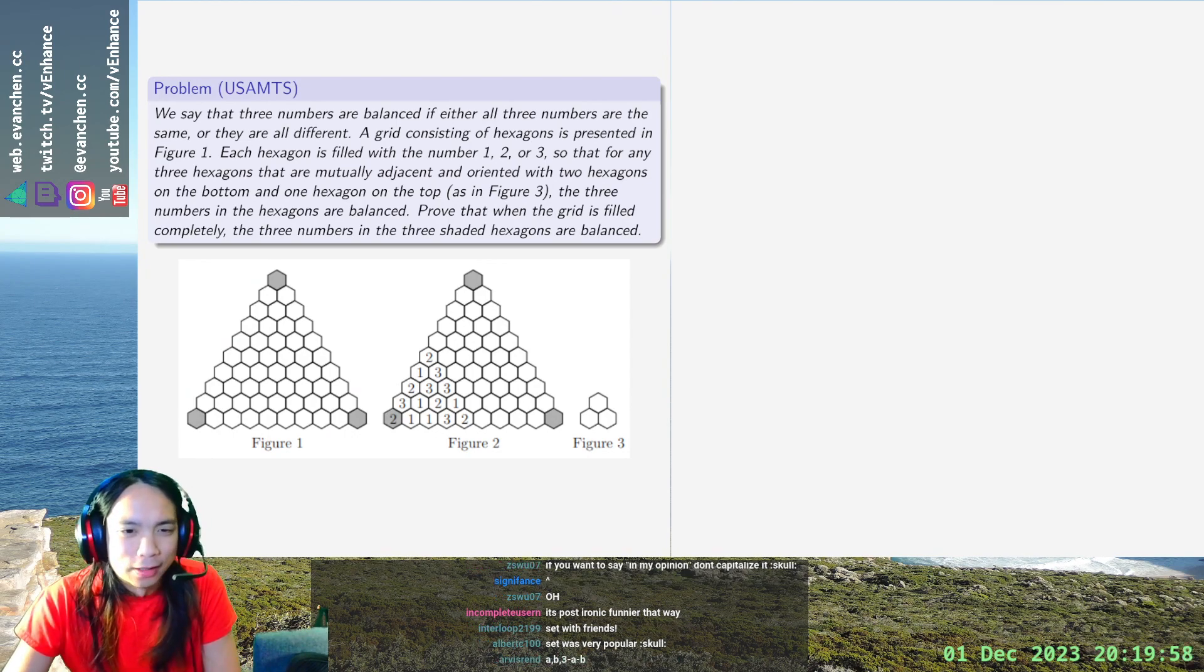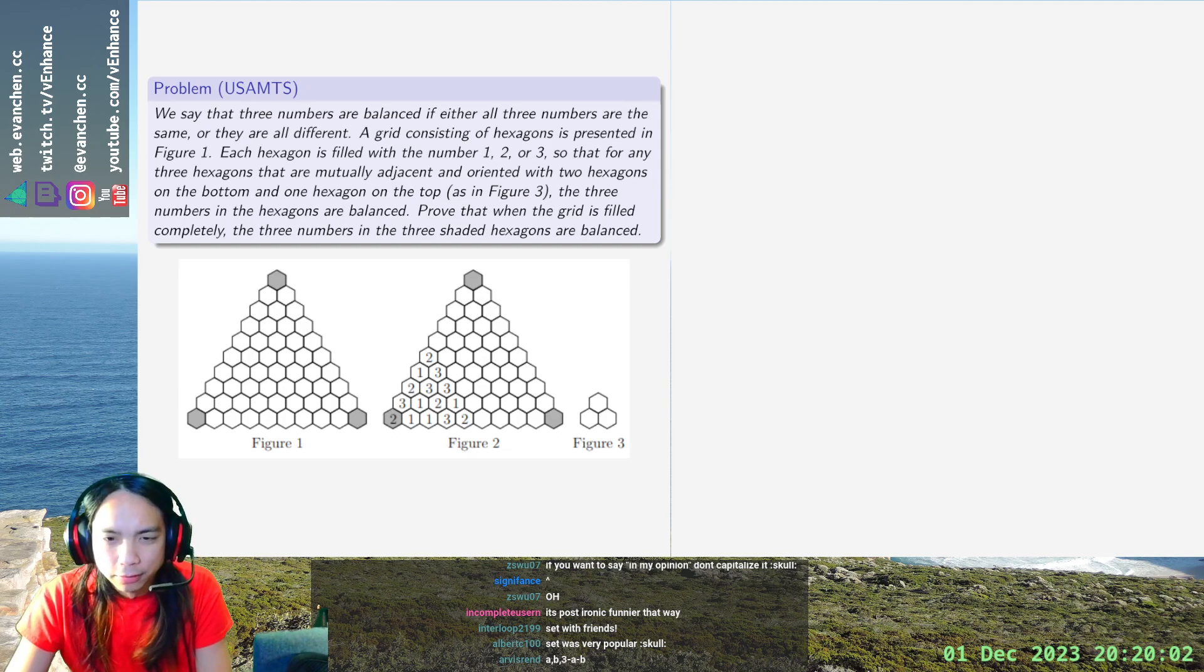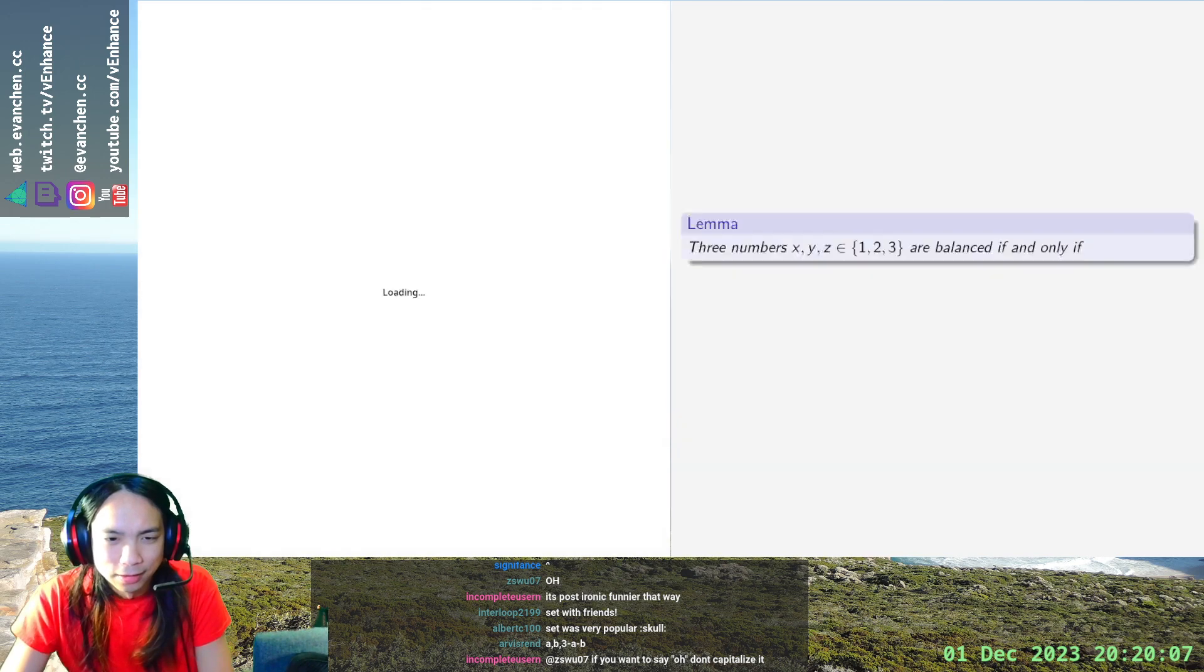Lemma: three numbers x, y, z in 1, 2, 3 are balanced if and only if x plus y plus z is 0 mod 3.